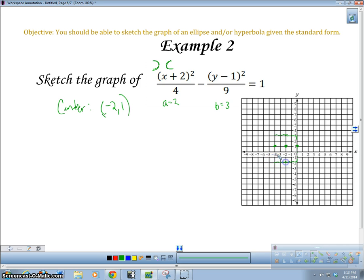Okay. Now, if you don't want to draw the rectangle, you can always do this as well. You could find the slope, the slope of the asymptotes. And the slope of the asymptotes, again, is plus or minus b, which is 3, over a, which is 2. So what I do is from the center, I would go up 3.